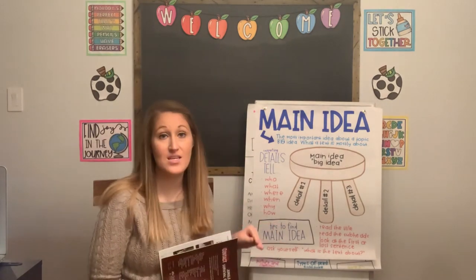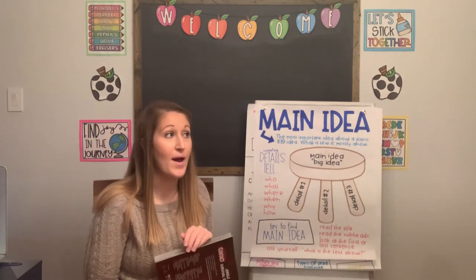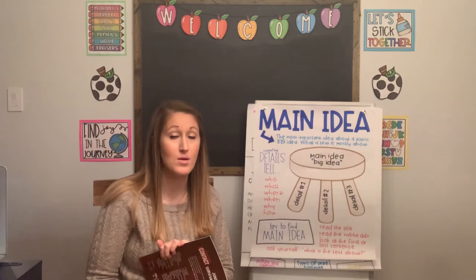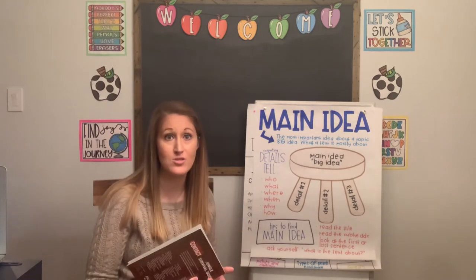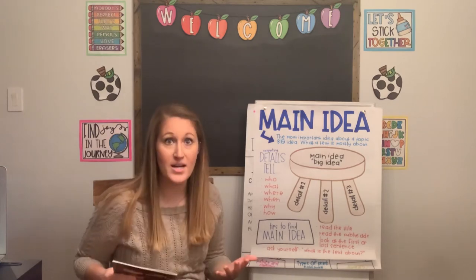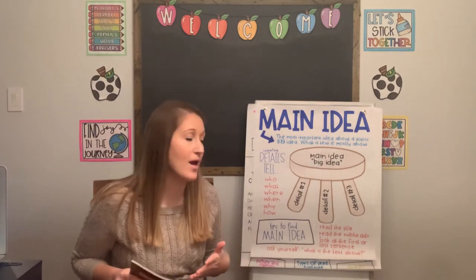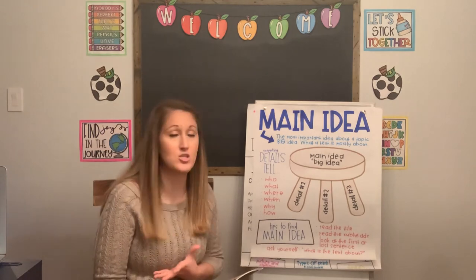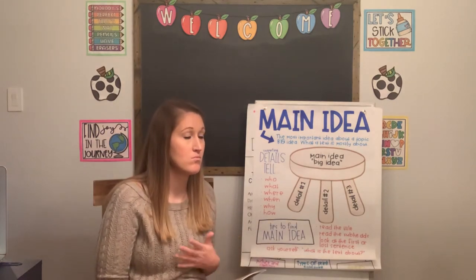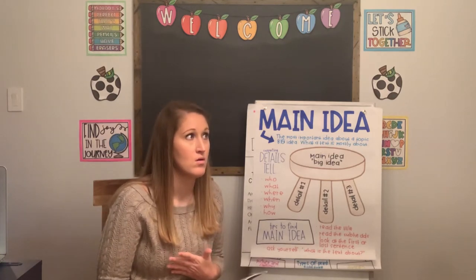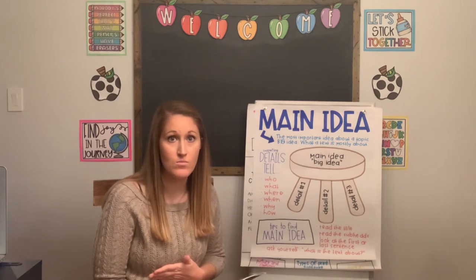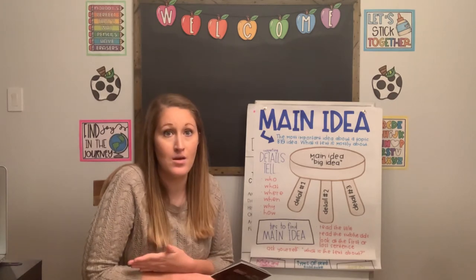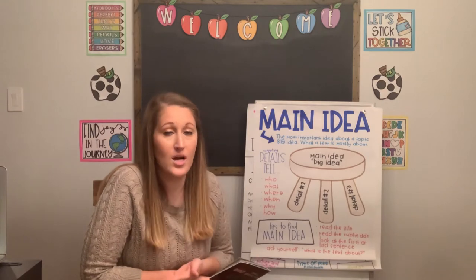Look at the first or last sentence. The first and last sentences of passages and articles can be very telling about what that article is going to be about. Sometimes people ask a leading question, or sometimes they just come right out and say their opinion or a fact. And last, ask yourself this question: what is this text about? What is it trying to teach me? Authors write nonfiction texts for a reason, and that reason usually is to inform us, to teach us about something.